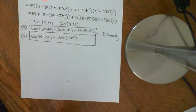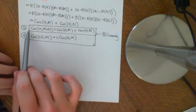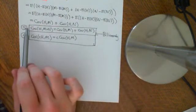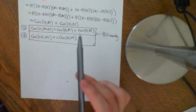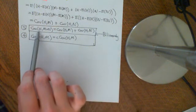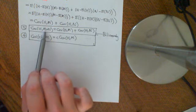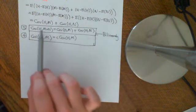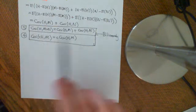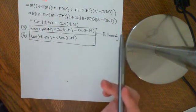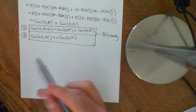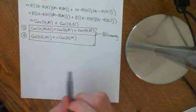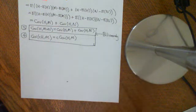Welcome to this video. In the first part, we're going to take property 5 from the previous video — the second bilinearity property — and expand it, generalise it. We're going to have sums of random variables on both sides and work out what the covariance is in terms of the individual components. The main topic of this video is the variance of sums, and in particular proving that if two random variables are independent, the variance of x plus y equals the variance of x plus the variance of y.